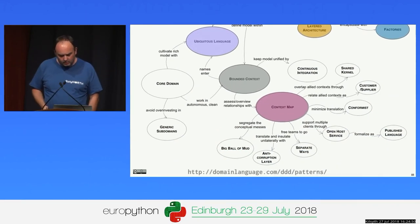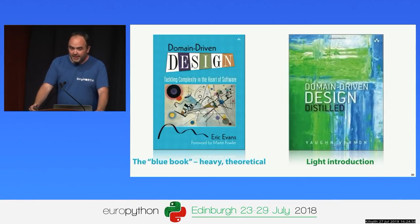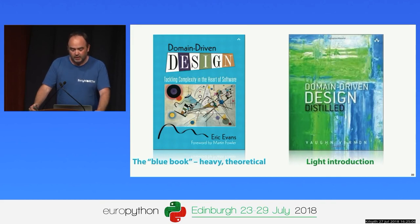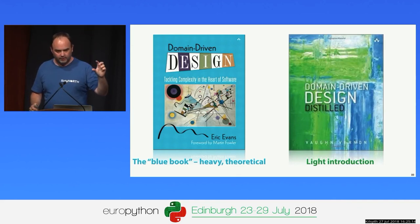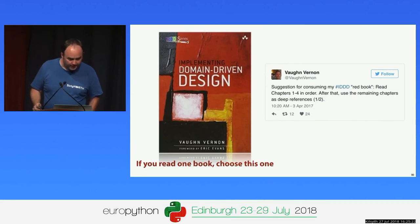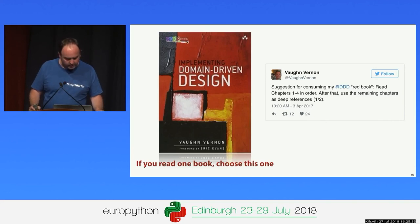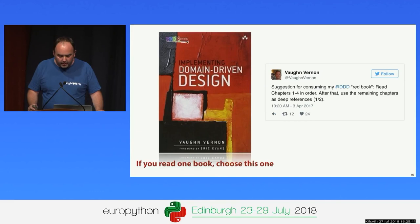If your interest has been piqued by what I've said today, there is the blue book — remember, it's not the best starting point. A very lightweight starting point is Vaughan Vernon's book, 'Domain-Driven Design Distilled' — about a centimeter thick versus the blue book's five or six centimeters. If you choose to read only one book, read this one. Also 'Implementing Domain-Driven Design' by Vaughan Vernon — a suggested approach is to read chapters one to four, then go away and build something, and come back and use the rest as a reference.